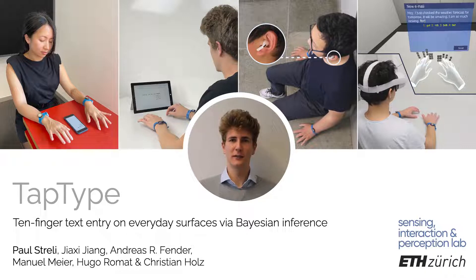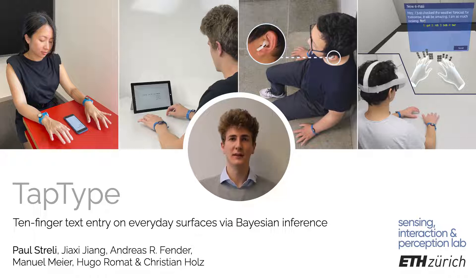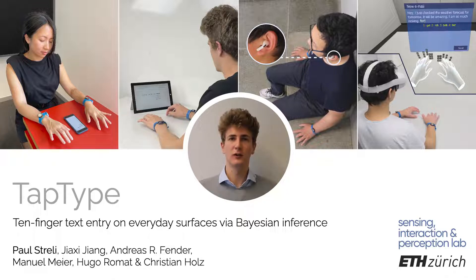In this talk I present TapType, an ultra-mobile text entry method that allows full range and 10-finger typing much like on regular keyboards. The key enabler of our method is a Bayesian deep learning component for ballistic signal processing and language modeling. This work I did together with my lab mates and my advisor Christian Holtz at ETH Zurich.